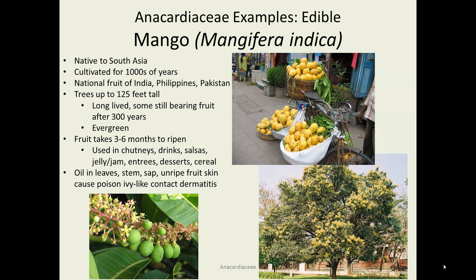Mango is a wonderful fruit — actually the national fruit of India, the Philippines, Pakistan, and probably some other places. It's native to southern Asia and has been cultivated for a long, long time. These are large, evergreen trees that can live up to 300 years. They're not frost tolerant; some are grown in Florida. The fruit takes quite a long time to ripen, and until it is ripe, the skin contains the same contact dermatitis-causing agent as the leaves, stems, and sap.